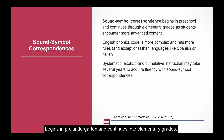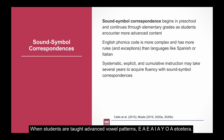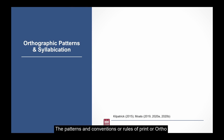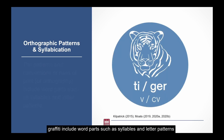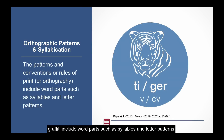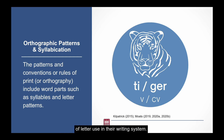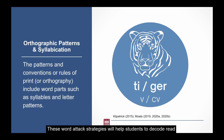Matching sounds to symbols begins in pre-kindergarten and continues into elementary grades when students are taught advanced vowel patterns such as EA, EE, AI, AY, OA, etc. The patterns and conventions, or rules of print, or orthography, include word parts such as syllables and letter patterns. Through explicit instruction and practice, students with dyslexia can understand and remember patterns of letter use in their writing system. These word attack strategies will help students to decode, read, and spell complex words more accurately and efficiently.